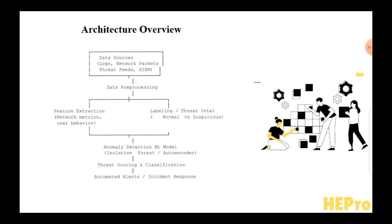The architecture of the AI-Powered Threat Detection System begins with data sources such as network packets, system logs, and external threat feeds. This raw data is passed to a data pre-processing layer for cleaning, normalization, and feature extraction, focusing on parameters like network traffic volume, login patterns, and user actions. The extracted features are paired with threat intelligence operations to label data as normal or suspicious.